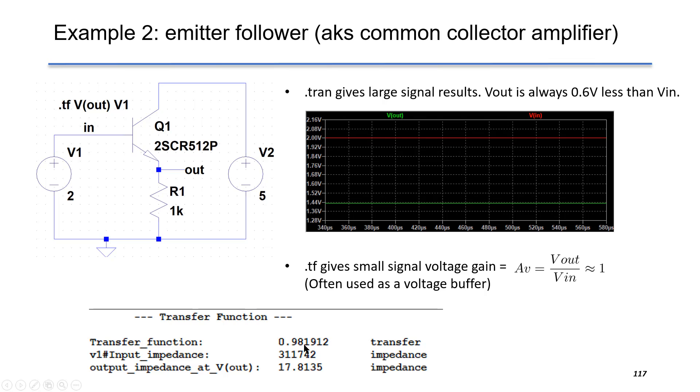So LTSpice found the transfer function as 0.98, which is very close to 1. The circuit has quite large input impedance and small output impedance.